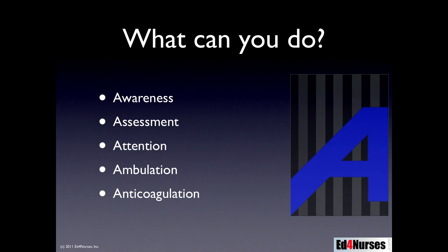Now, why is this important and what can you do? Let's look at the five A's of VTE prevention. First is to be aware — be aware that patients with these risk factors are at higher risk for developing a venous thromboembolism. Next is assessment: assess your patient and look for these risk factors, remembering that many times a VTE won't be obvious on clinical assessment because it's in a vein with redundant circulation, causing no visible swelling or redness. Third, bring the high risk to the attention of the physician.